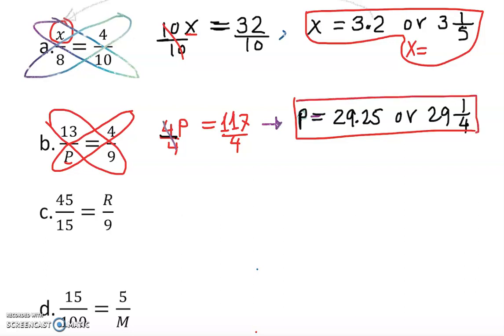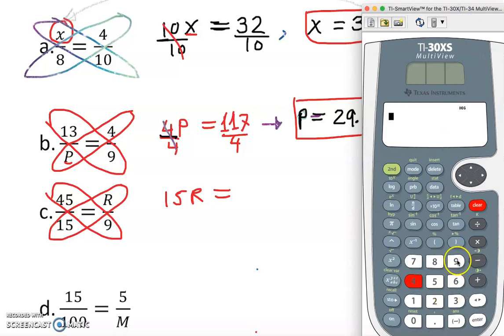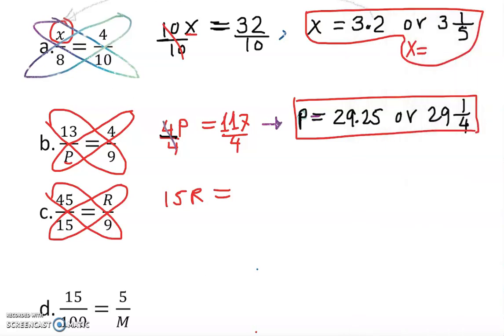Let's take a look at the next one. I do the same thing: cross multiply. Whatever is the variable, you do that first, so 15R equal to 9 times 45. Check it out, 9 times 45 enter, this gives you 405.